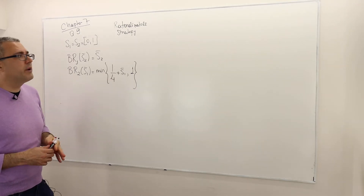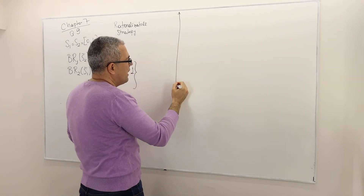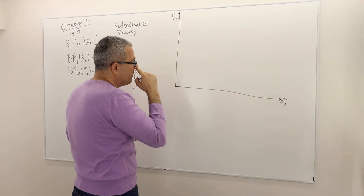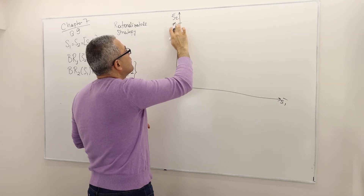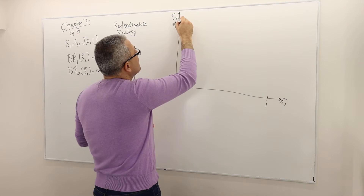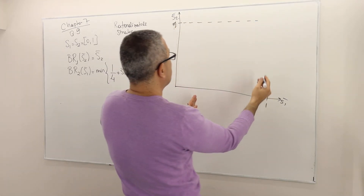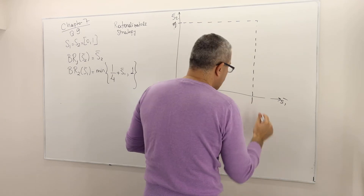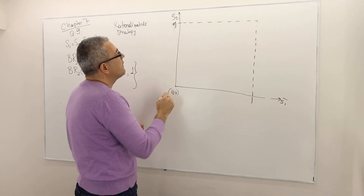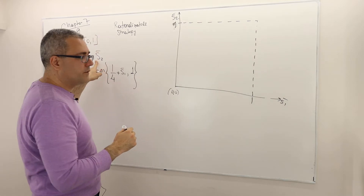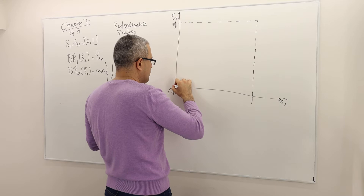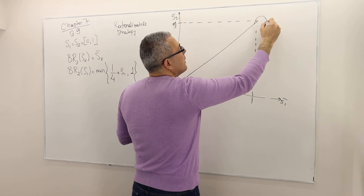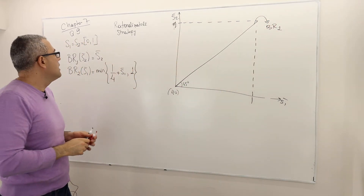The first part of the question asks us to draw the best response functions for both players. Let's set up axes with s1 and s2, where strategies come from the interval [0,1], so the maximum strategy is 1, giving us a unit square. Player 1's best response function is simply a straight line — x equals y, the 45-degree line.